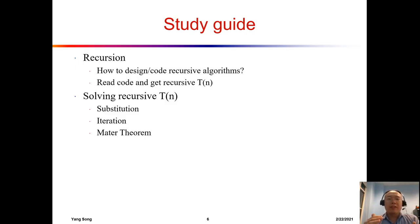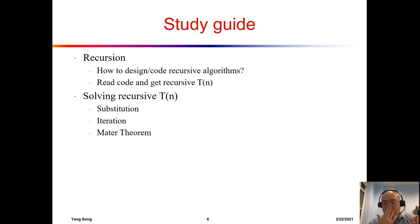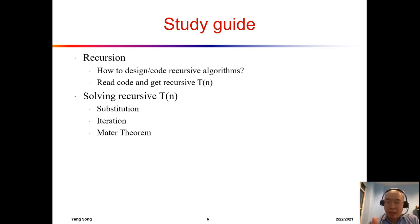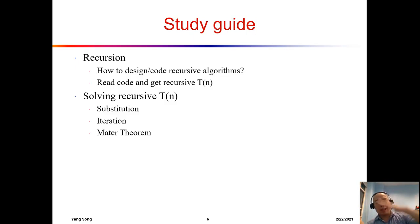When you have a recursive algorithm, you should be able to derive the recursive form of T(n) by reading and analyzing the code. After you have the recursive T(n), the goal is to transform it into a polynomial in n, from which you can determine the upper bound, lower bound, and finally Big Theta.